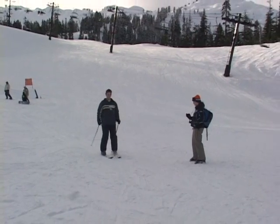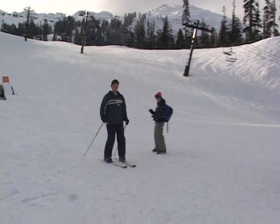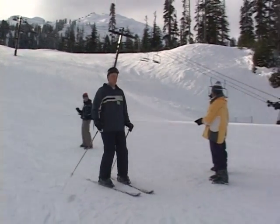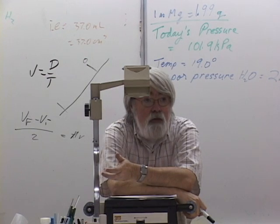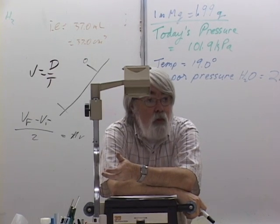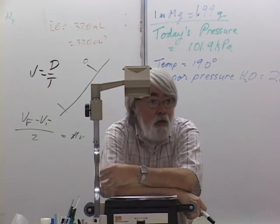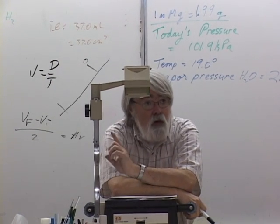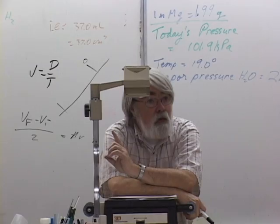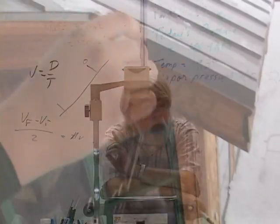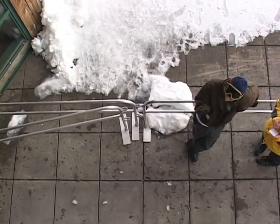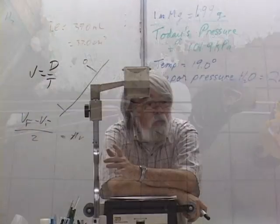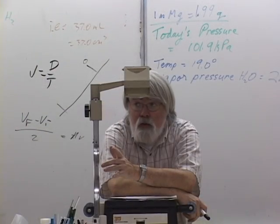I'm asking you to find G, the acceleration due to gravity, at a place other than sea level — which is where we are, at 90 feet above sea level. We're going to climb up and see if there's any significant difference. I'm asking you to use both methods because you may get a different value. Which one is the most accurate? That's what I'm looking for.